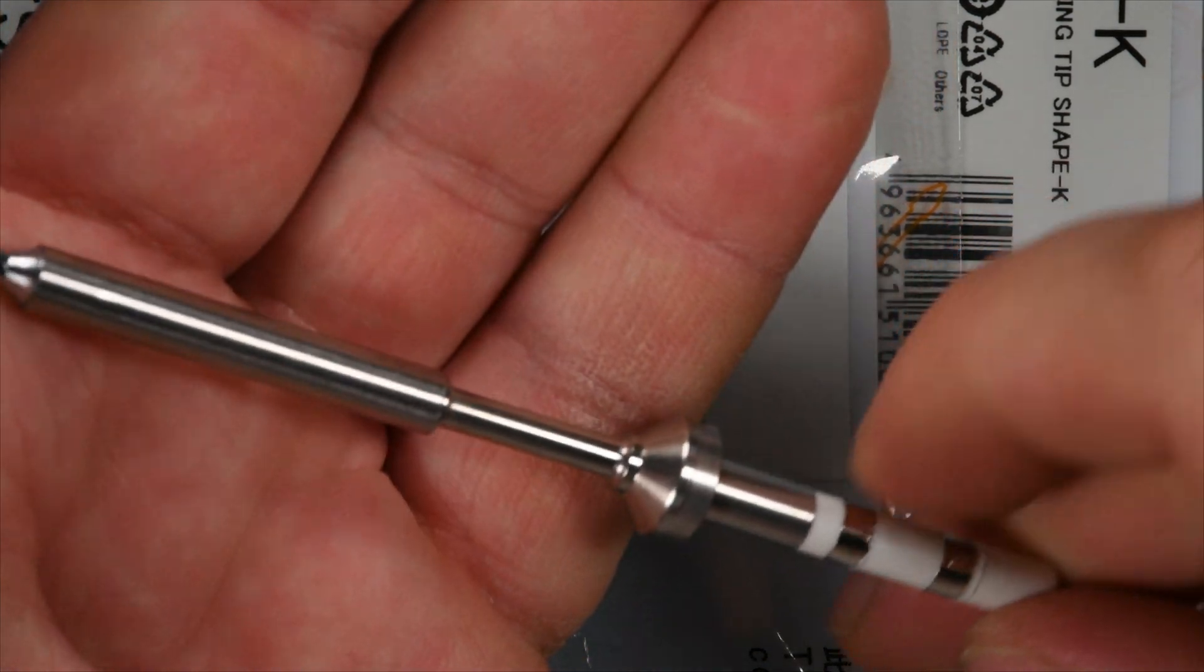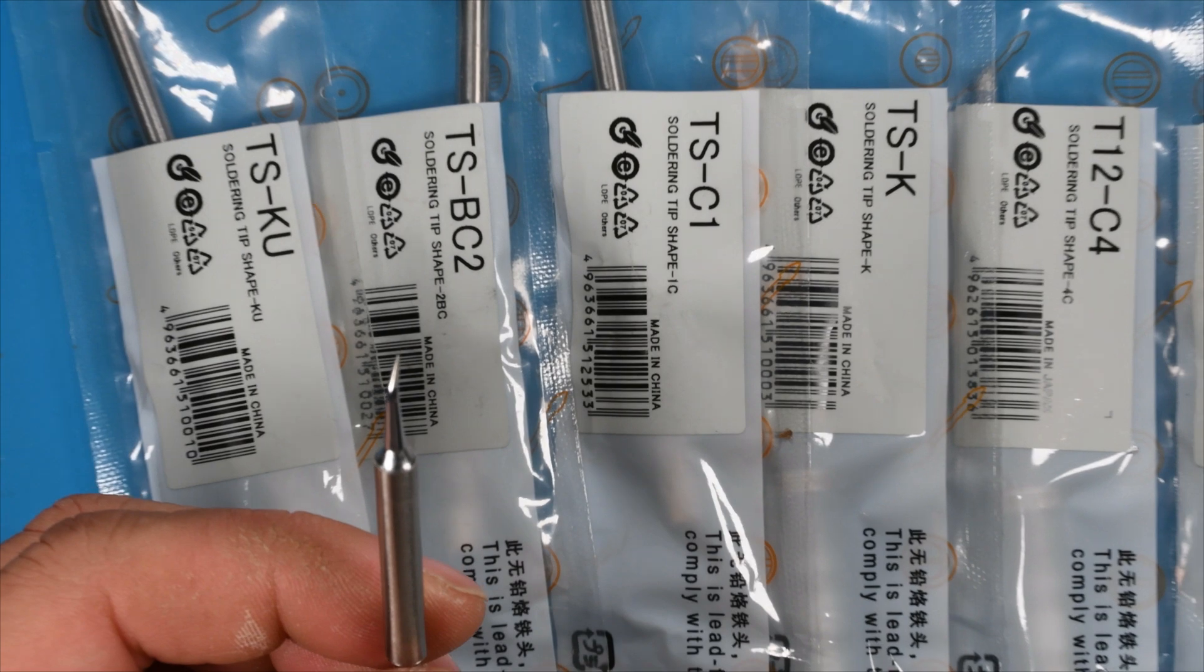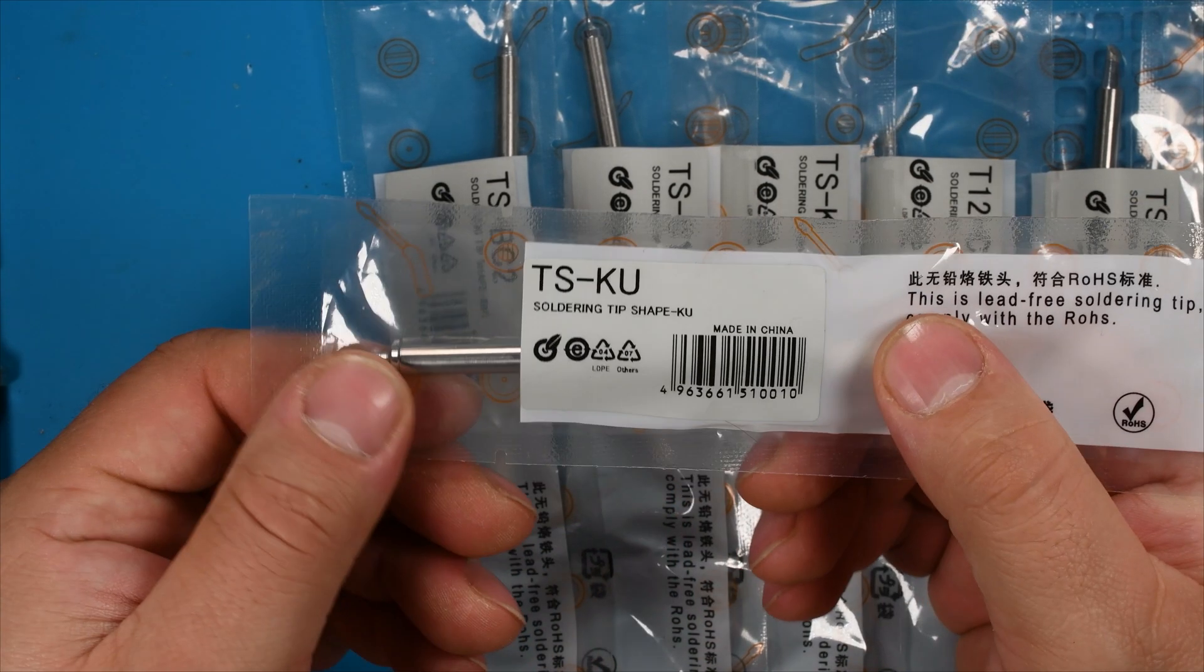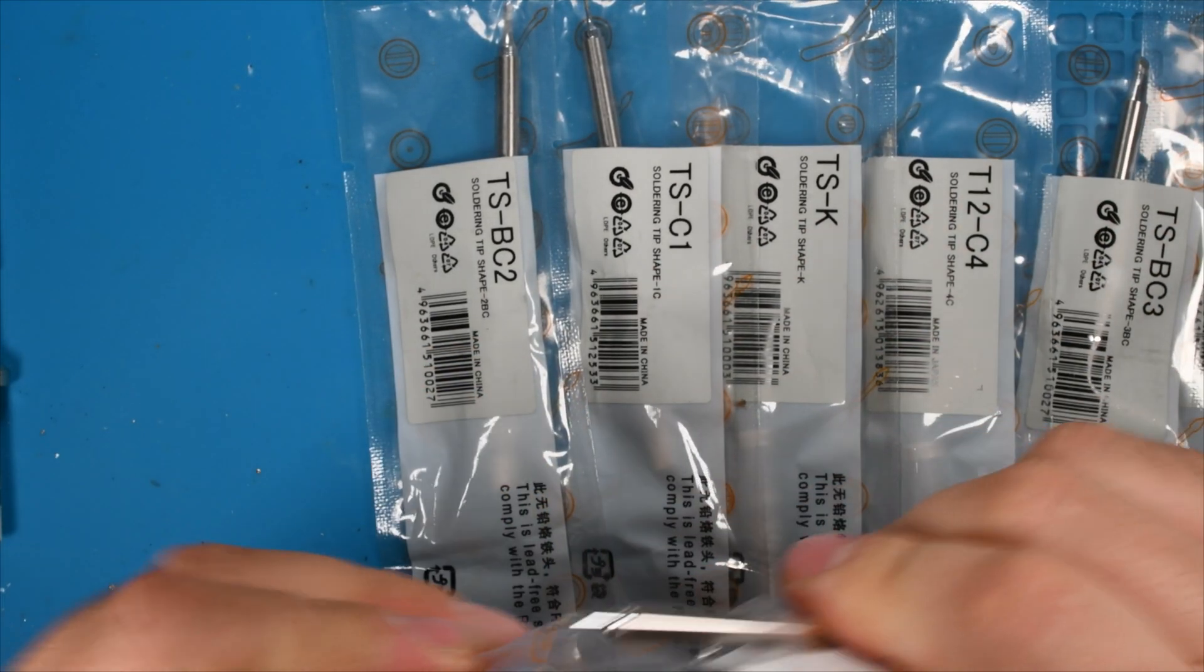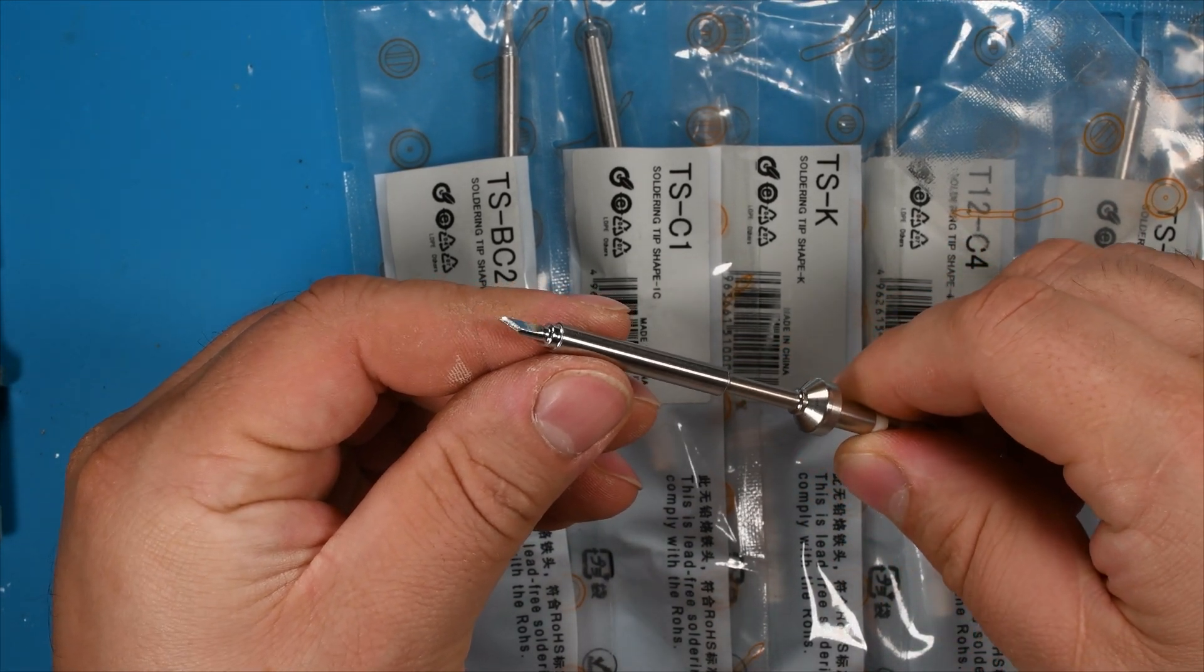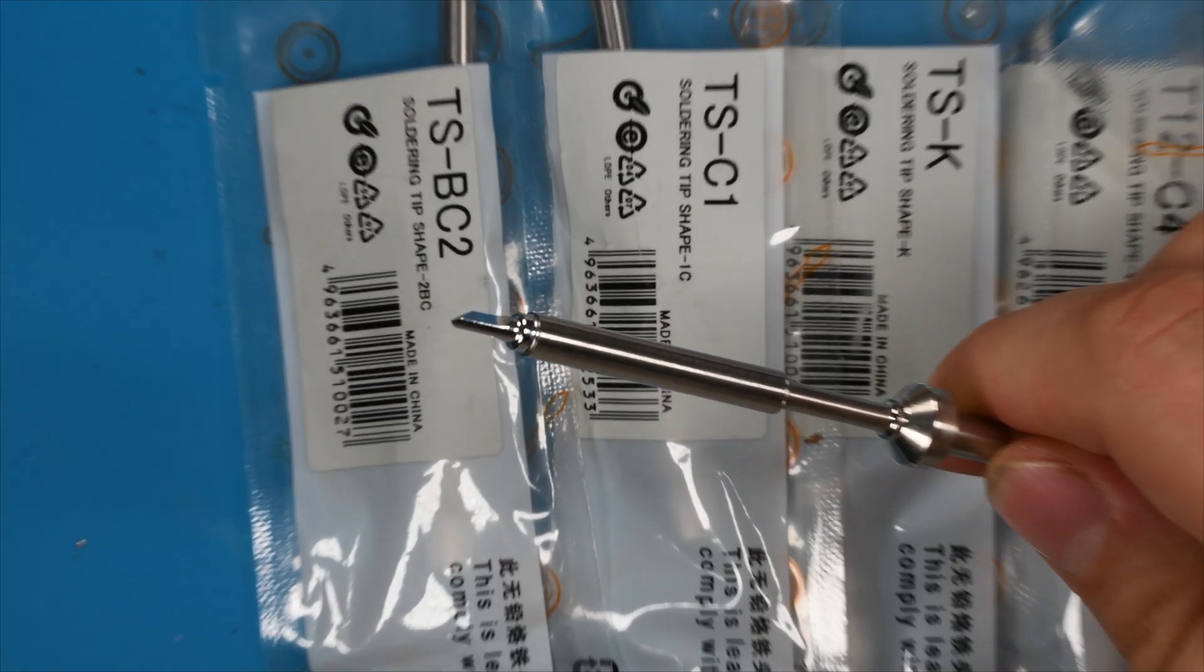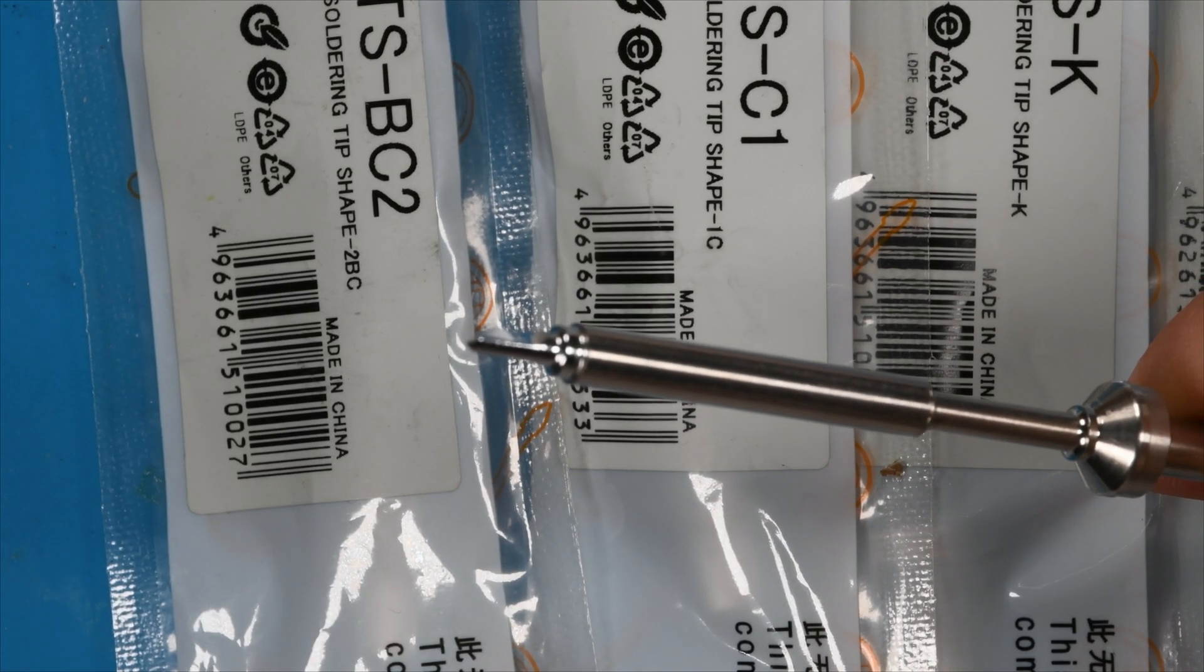As you can see, all soldering tips are labeled and quality sealed in plastic. When I unpacked it, I immediately noticed that the soldering tips are already heavy for their size, but not too heavy - heavy in a quality way. The processing of the soldering tips looks great and the soldering tips are very well hardened.